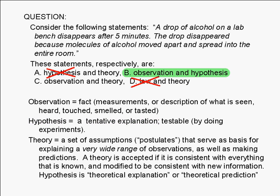In case you picked choice C, you may be wondering what the distinction is between theory and hypothesis. In common everyday usage, people tend to refer to a hypothesis as a theory. In science, a theory is actually something much bigger than a hypothesis. It's usually not possible to state a theory in one sentence — it's a set of ideas called postulates that serve as a basis for explaining a very wide range of observations. The postulates of a scientific theory usually change over time as new information is uncovered.